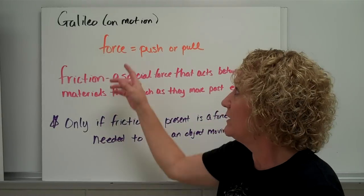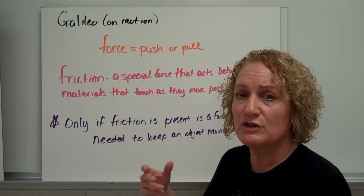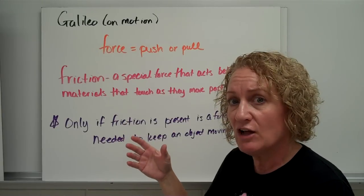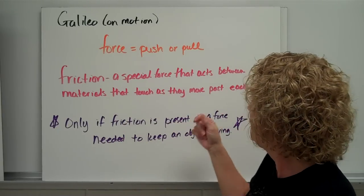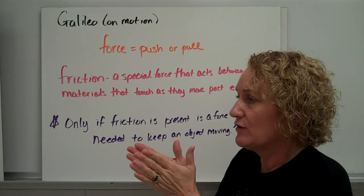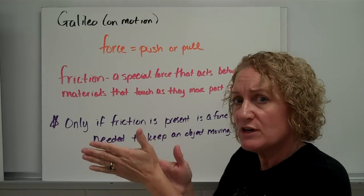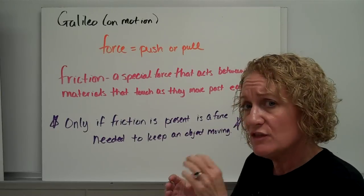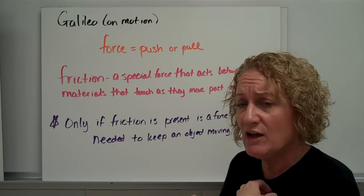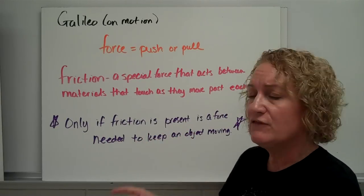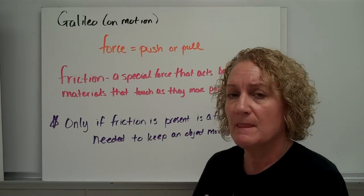Now Galileo is the guy that coined the term force and said force was a push or a pull. He actually gave it the name force. But he said there's this thing called friction. It's a special force and it acts between materials that touch one another as they move past one another. So if things are moving past one another and they're touching, friction is in place. But the most important thing that he said, in my opinion, was that only if friction is present is a force needed to keep an object moving.